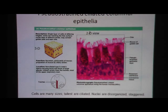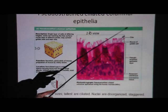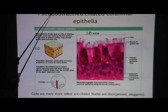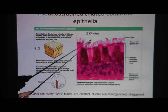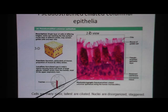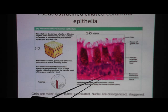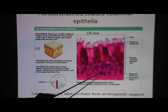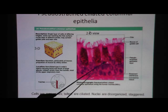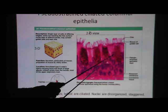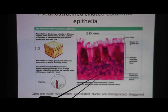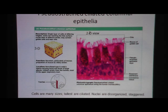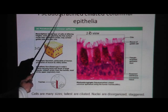In this case we're talking about pseudo-stratified ciliated columnar epithelium. Pseudo means fake, stratified means many layers. If you look at the nuclei here — this is a nucleus, that's a nucleus, that's a nucleus — it gives the impression that there are many layers. But it's not. It's only one layer. That's the first part of the word.